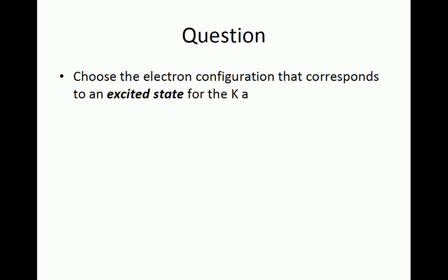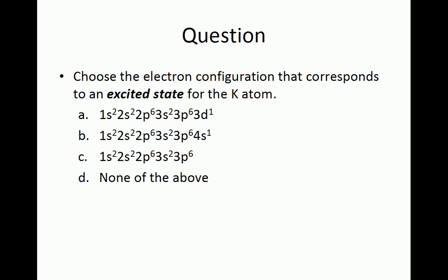Choose the electron configuration that corresponds to an excited state for the potassium atom. Option A: 1s2, 2s2, 2p6, 3s2, 3p6, 3d1.